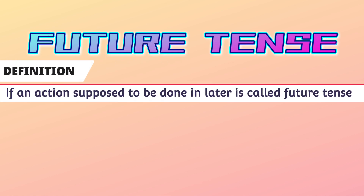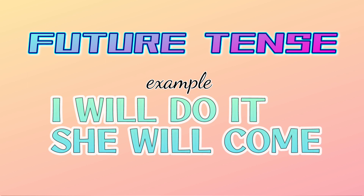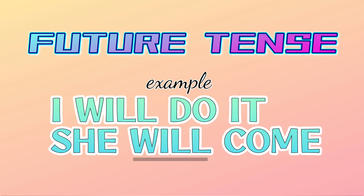Now move on to future tense. If an action is supposed to be done in the future, it is called future tense. For example: 'I will do it' and 'She will come.' These sentences express that some action will be done later. One more thing to note: we have to add 'shall' or 'will.' I think the basics of tense are now clear to you.